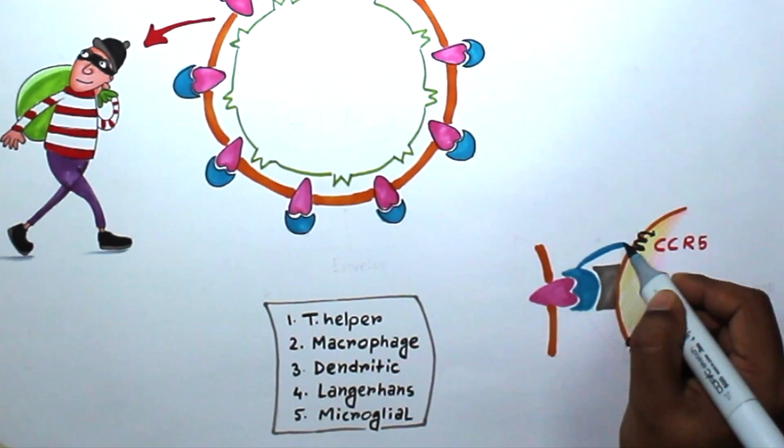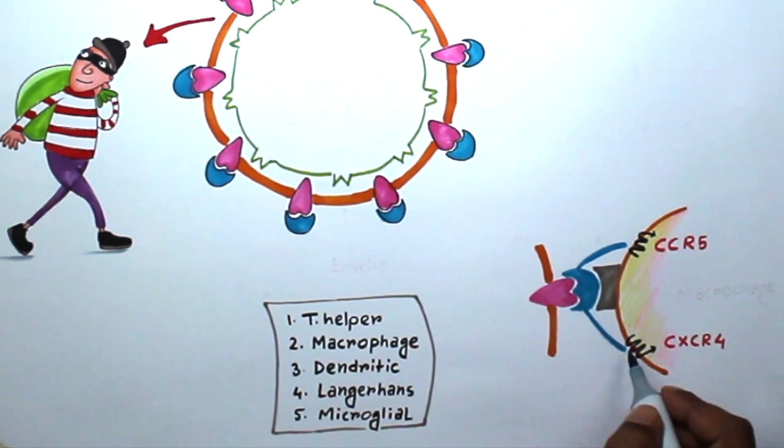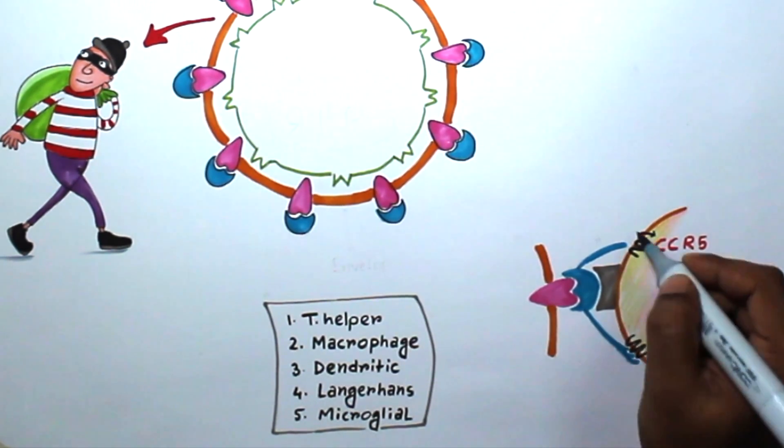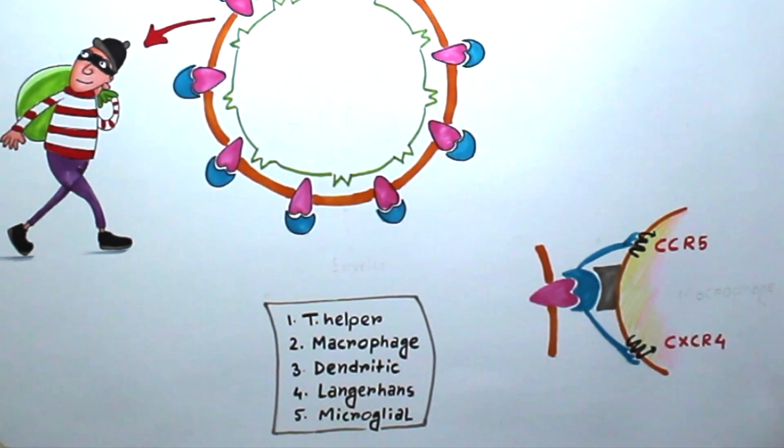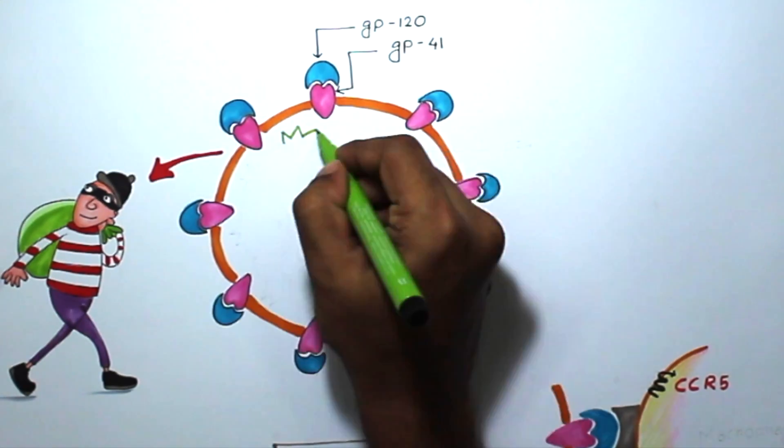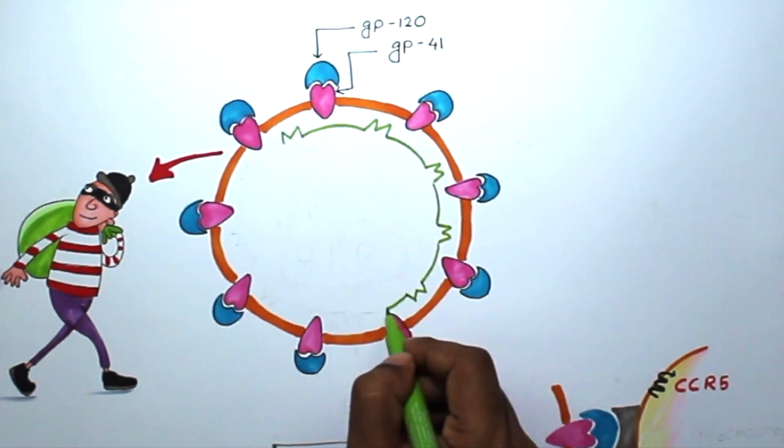As soon as GP120 attaches with the CD4 molecule, it gets activated and ready for a toxic hug. They express two hand-like projections which bind with the co-receptors, which leads to further activation of the GP41 molecule. GP41 molecule then pulls the cell towards it and gets fused with the cell membrane. Here you can see, just inside the envelope, there is matrix protein which is made up of GP17 molecule.